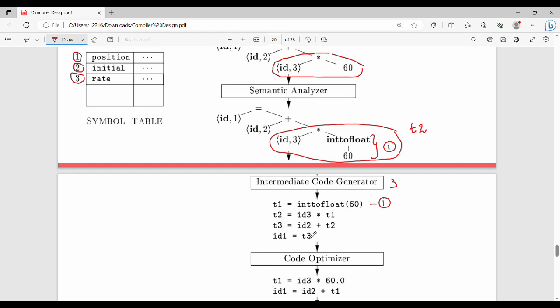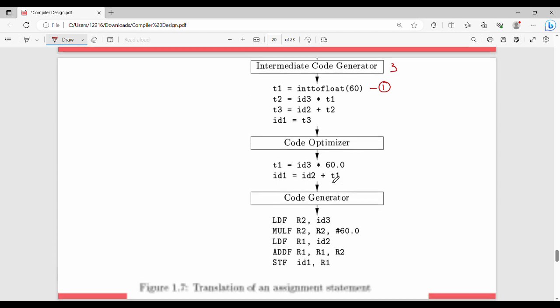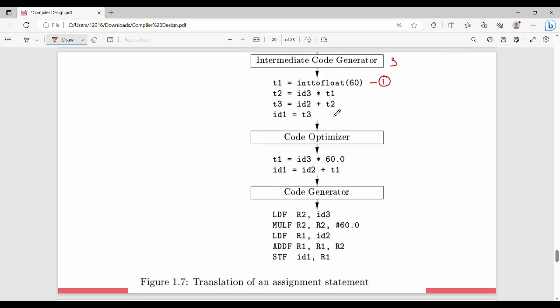Now we have the code optimizer. Code optimizer optimizes the intermediate code. In the first step, int to float of 60 becomes 60.0. If we use t1 in the next step, we will substitute t1 to 60.0. In the next step, we will use t2. We will store t1 in the next step, so we have two computation cycles reduced. This is code optimization.